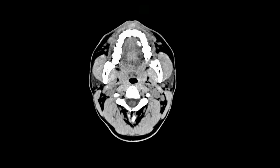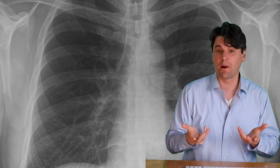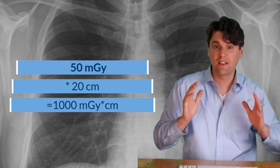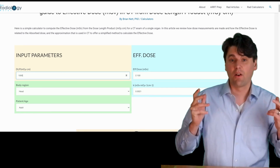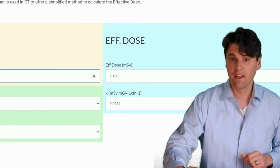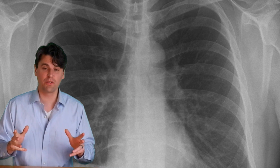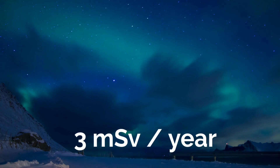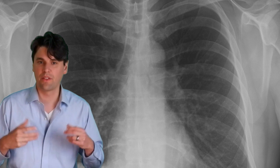The first example we're going to do is a routine brain CT. Imagine an adult comes in — a routine brain CT representative dose could be about 50 milligray, and for round numbers let's say the distance is 20 centimeters. So the DLP that the system is going to report is going to be 1000 milligray centimeters. With 1000 milligray centimeters and an adult with the area of interest as the head, you can see that the effective dose is around two millisieverts. To put that in context, three millisieverts is the background radiation on average you'll get in the United States, so a non-contrast CT represents about two thirds of background radiation.